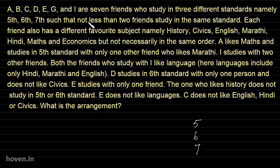Such that not less than two friends study in the same standard. This basically means that in each standard at least two persons are there — not one, not empty. So two or three — more than two — are possible.